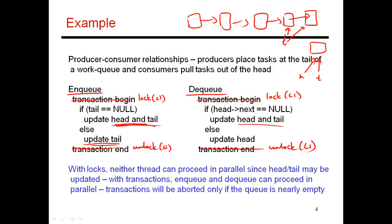Looking at the dequeue function: first I check if the queue has any elements. Once I determine it does, if there's more than one element, I pull out the head element and head advances to the next — so I'm only changing the value of head. But if there's only a single element and I pull it out, both head and tail were pointing to it, and now both have to point to null. So if there's only one element, I have to change both head and tail.